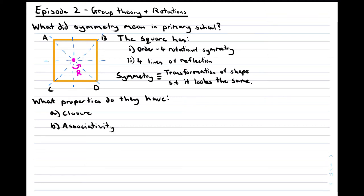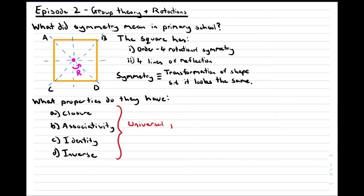Associativity: by defining the transformations as one after another, I ensure they satisfy this property. Hopefully you have an idea of what associative means already. Identity: if I do nothing to the square, it looks the same. The process of doing nothing is considered a symmetry transformation called the identity. And finally, Inverse: for every symmetry transformation, there is a way to undo it — e.g. we undo a pi/2 anticlockwise rotation with a pi/2 clockwise rotation. These four properties instill in the most abstract sense the logical properties of a symmetry, so mathematicians define a mathematical structure with these properties as the axioms. The mathematical structure that encapsulates symmetries is called group theory.